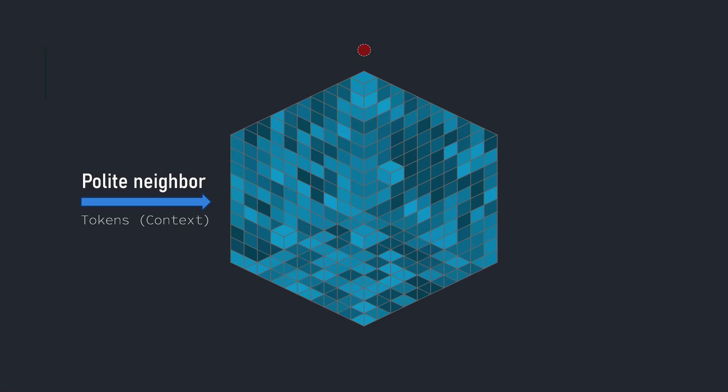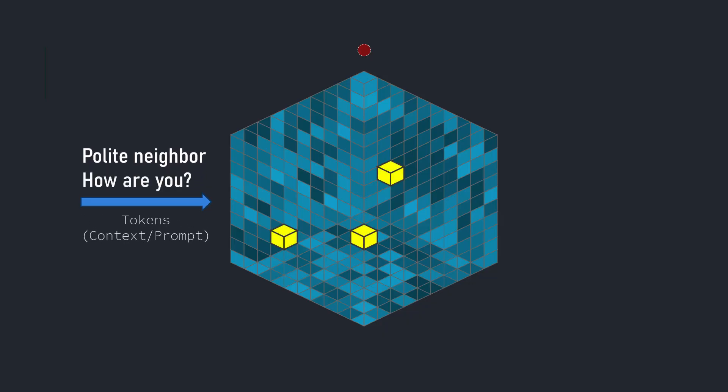It needs to move through the space of things that it's seen before to generate something that looks like a human response. So all of the words we give the LLM, like 'polite neighbor,' and then let's say we say 'how are you?' — we think of those like lighthouses or beacons, buoys in the sea.